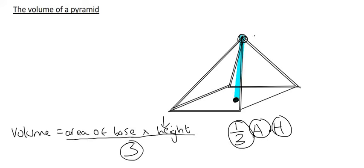So in summary, volume is always equal to area of base times height, but as soon as you have a shape that looks like a pyramid, then you must divide your answer by three.